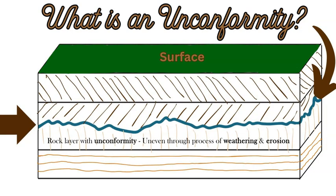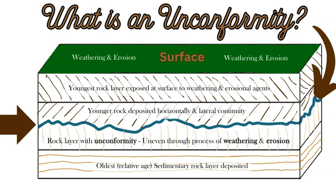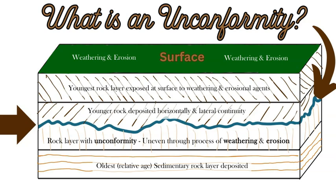Here we have a diagram showing a darker bluish layer representing the unconformity — the layer that was eroded and weathered. Subsequent future deposition of new sediment was then laid down horizontally, and later rocks were added above. This unconformity is now buried at a certain depth within the crust, and this can give scientists indications of what happened during that time period in Earth's history at that location.